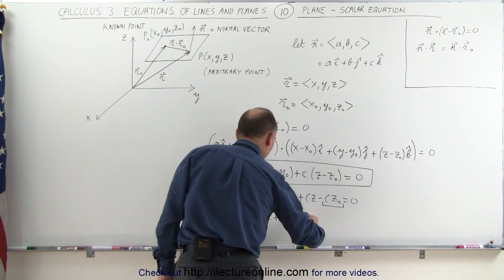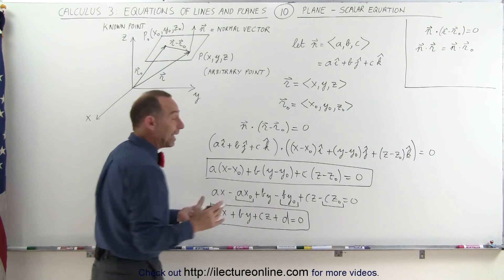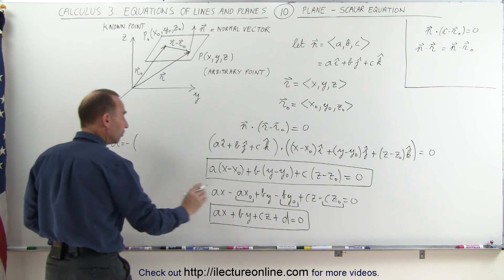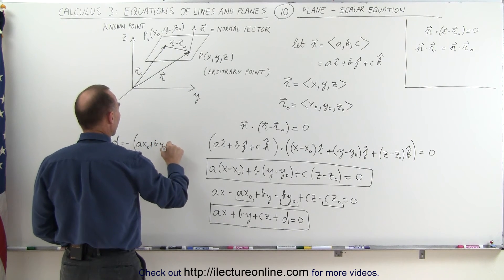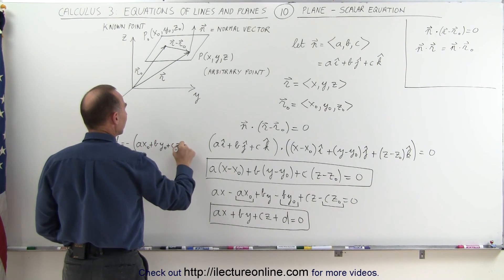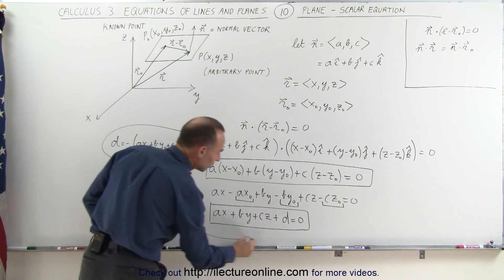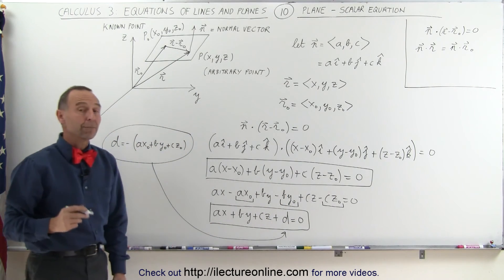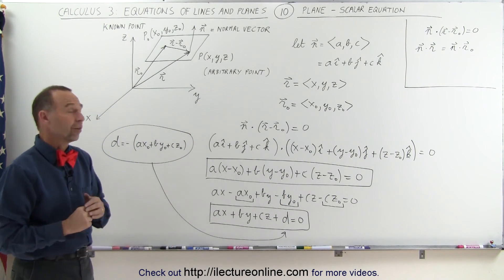So that now becomes the new form of the equation, understanding that d is equal to the negative of the sum of those, that means a x sub-naught plus b y sub-naught plus c z sub-naught. If I realize that this is the value of d that goes in the equation over here, then I can write the equation for a plane in three-dimensional space as follows.